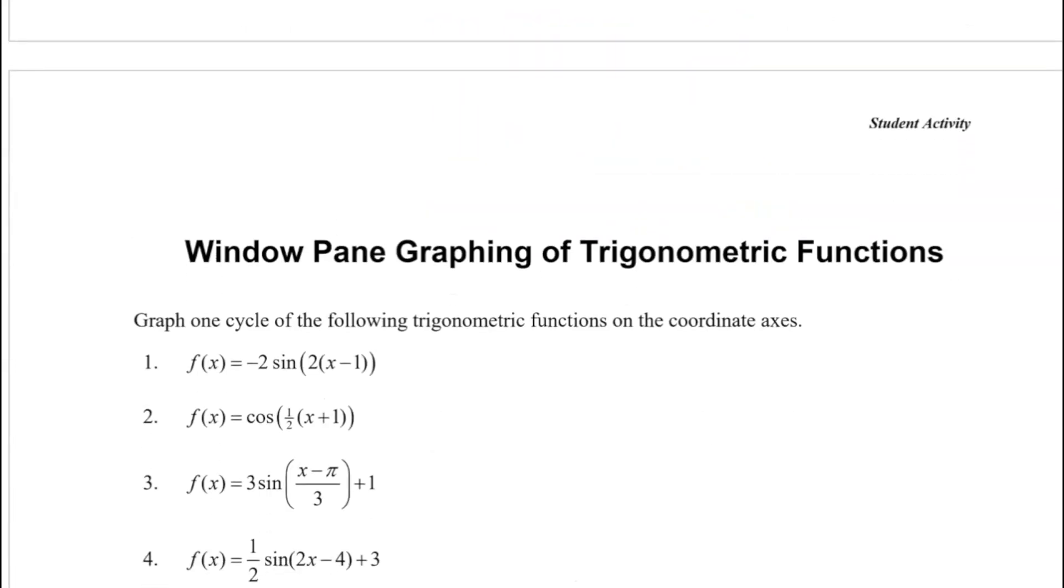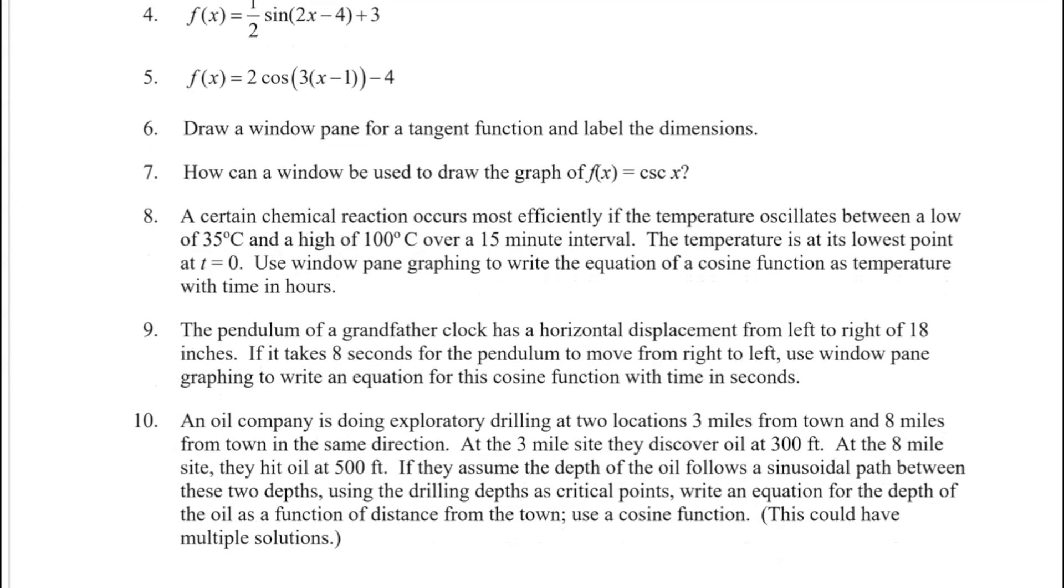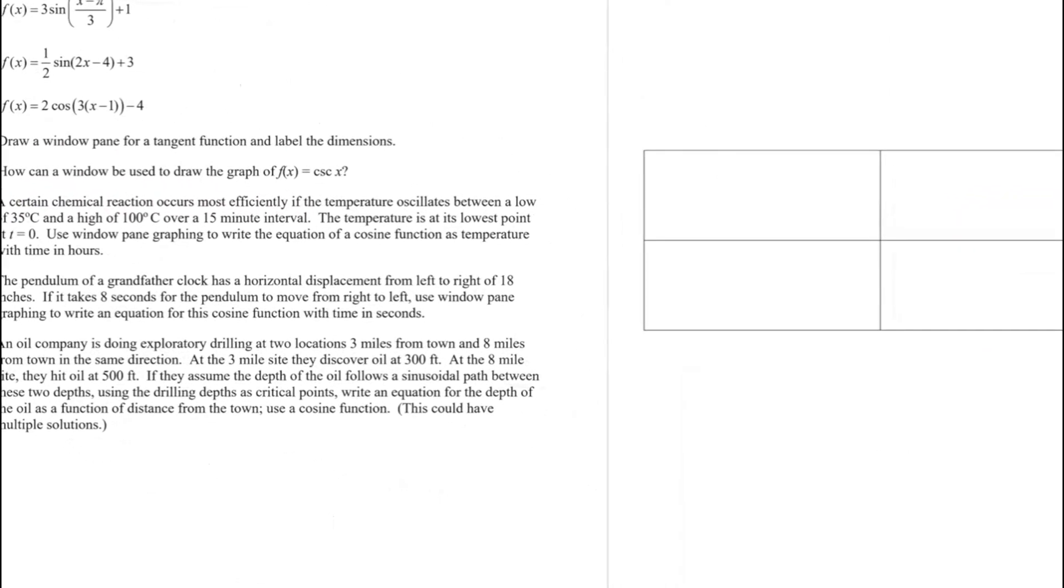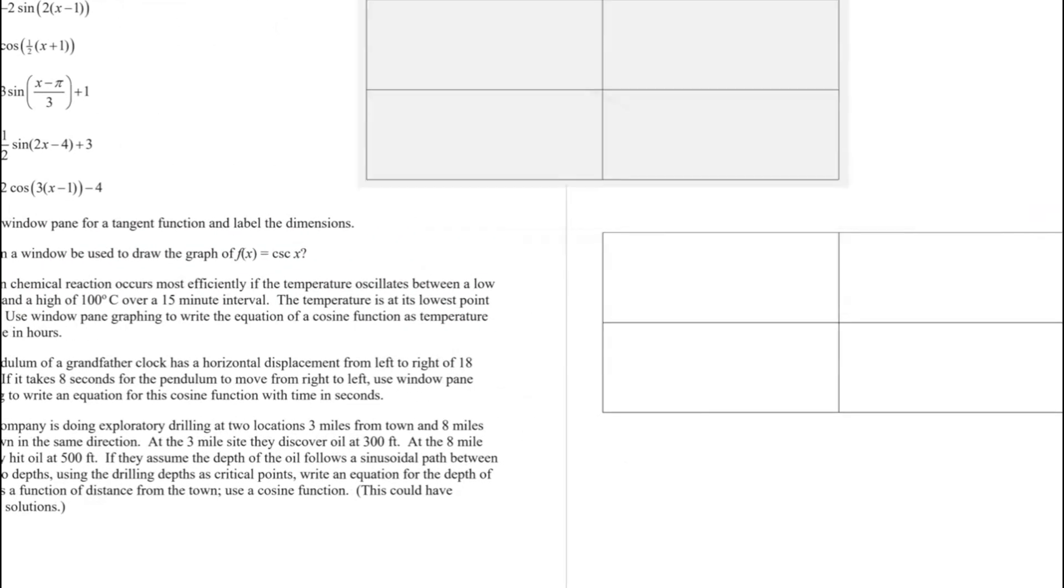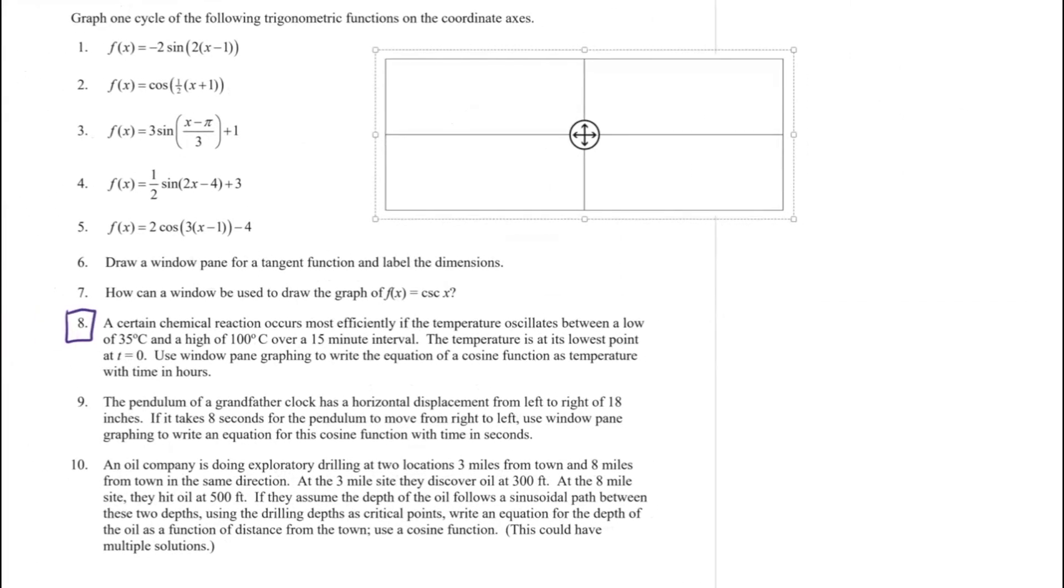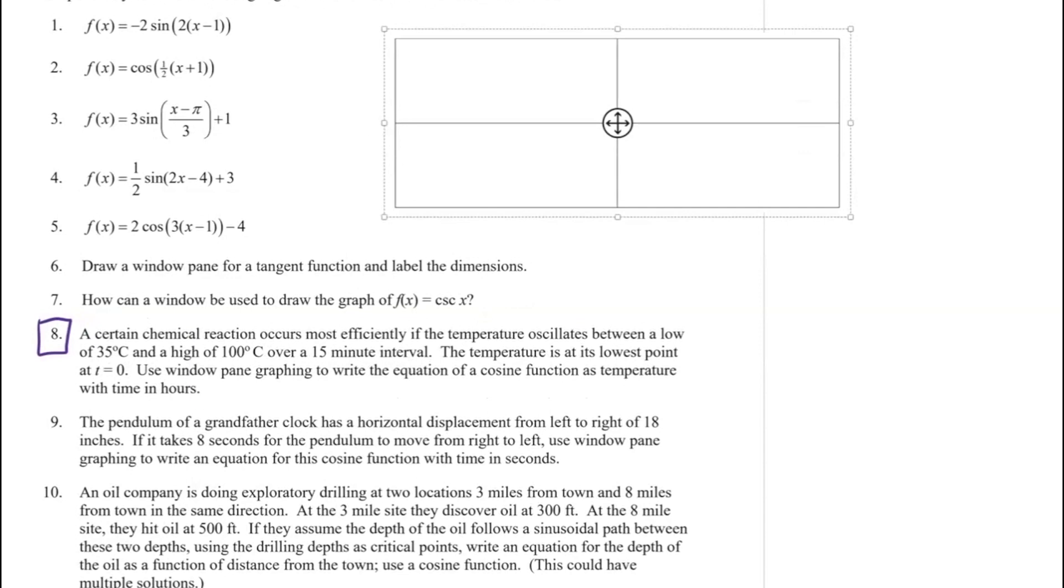One of the nicest features of windowpane is using it to write trig functions when you're given an application situation. I want to look at this particular example. I have a certain chemical reaction that occurs most efficiently if the temperature oscillates between a low of 35 and a high of 100 over a 15 minute interval. The temperature is at its lowest point at t equals 0. Use windowpane graphing to write the equation of a cosine function as temperature with time in hours.